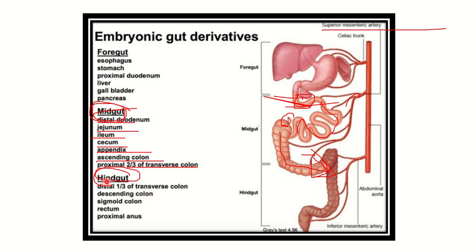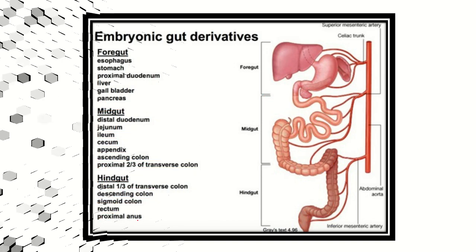The hindgut: in the picture we can see this portion is the hindgut. From the hindgut, the left one-third of the transverse colon, then the descending colon, sigmoid colon, rectum, and anus are derived. So the hindgut gives rise to the distal one-third of the transverse colon, descending colon, sigmoid colon, rectum, and proximal anal canal.